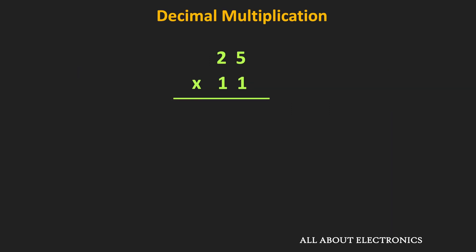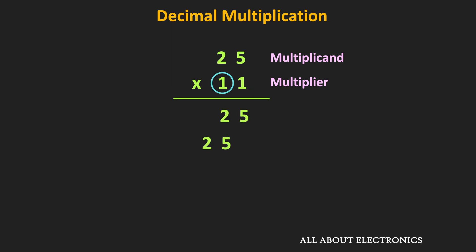So as you know in decimal multiplication, each digit of the second number is multiplied with each digit of the first number — in other words, each digit of the multiplier is multiplied with the multiplicand. As a result, we get partial products. These partial products are shifted according to their weights, and the addition of these partial products gives us the multiplication of the two numbers.